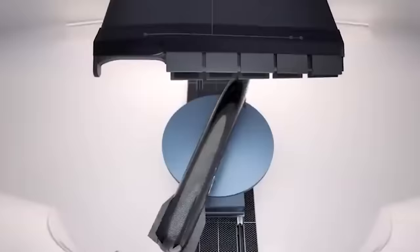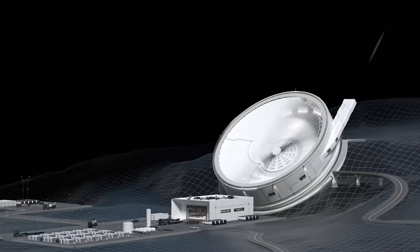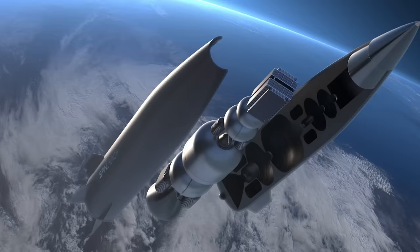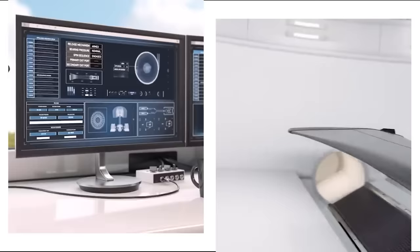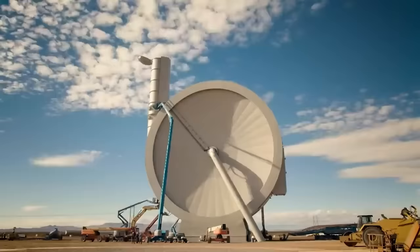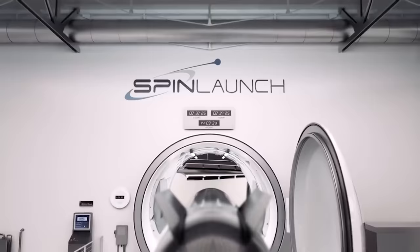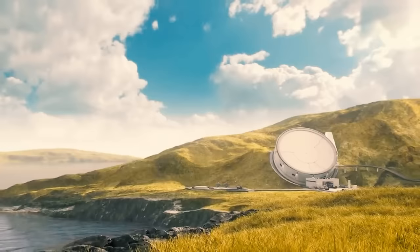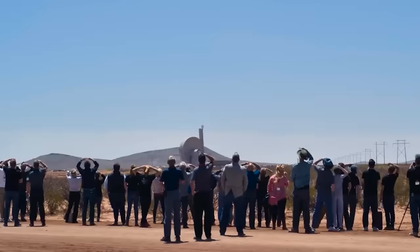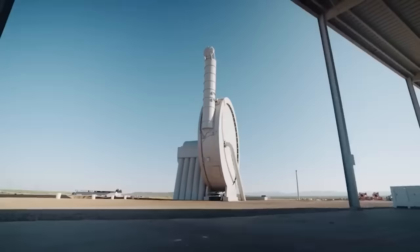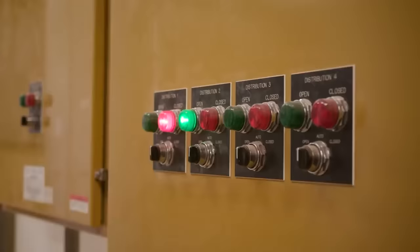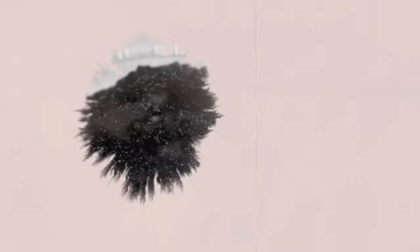The company reported that all test payloads were flown and successfully recovered. The suborbital accelerator is a 33-meter steel structure that incorporates a spinning arm powered by electricity. Within the accelerator, a satellite is placed, and the rapid rotation generates kinetic energy, aiming to propel the satellite at speeds exceeding five times the speed of sound. Designed to deploy satellites into orbits approximately 2,000 kilometers above Earth's surface, SpinLaunch envisions expanding its technology to reach even higher orbits.